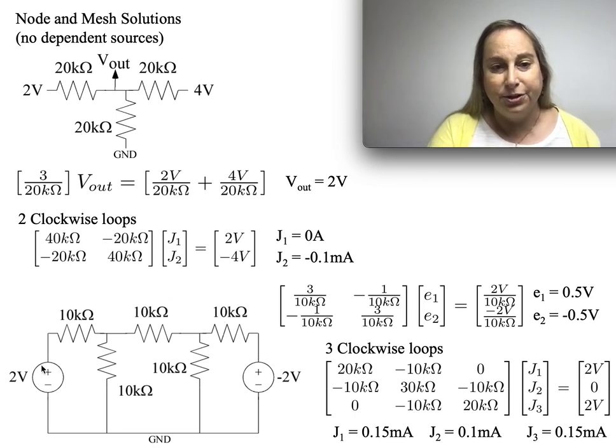Take a slightly more interesting circuit here at the bottom where it's 2 volts here and minus 2 volts and a bunch of 10K ohm resistors. Now one of the first things I'm going to notice is that since it's 2 volts and minus 2 volts, the lower node is ground.